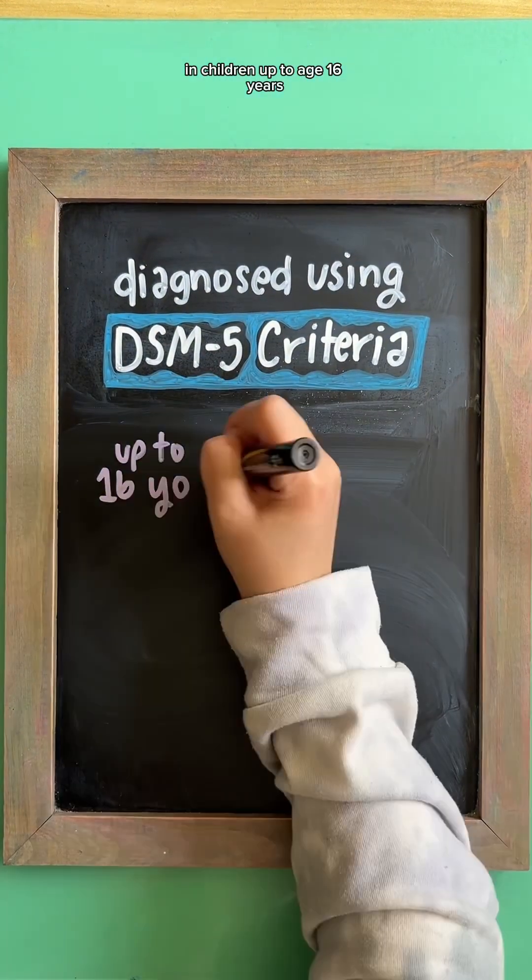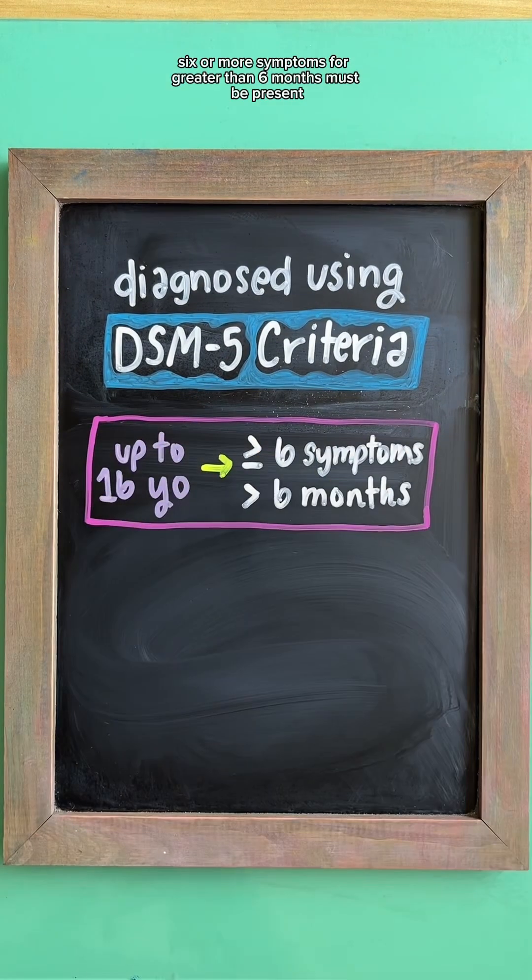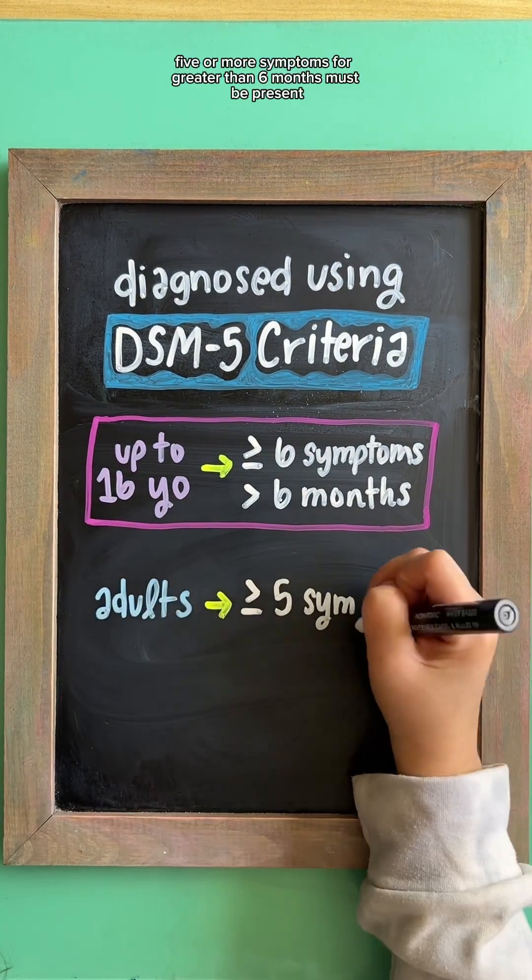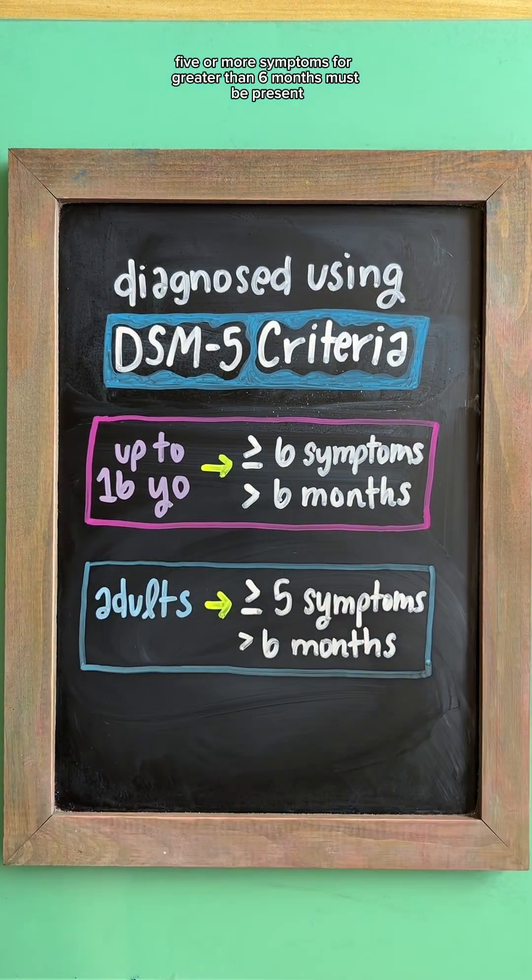In children up to age 16 years, 6 or more symptoms for greater than 6 months must be present, and for adults, 5 or more symptoms for greater than 6 months must be present.